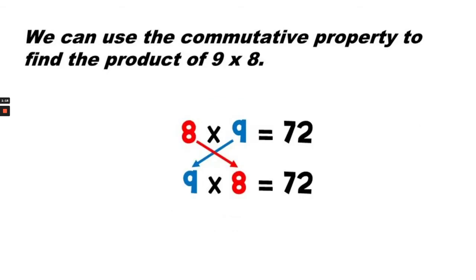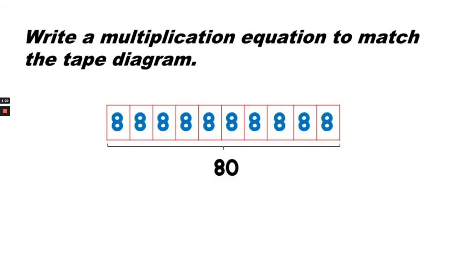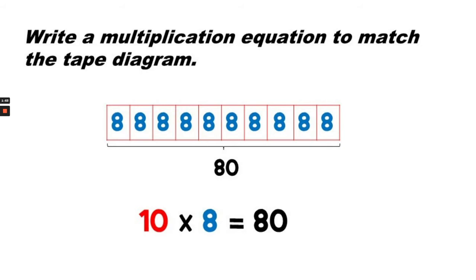Using the commutative property, we can say that 8 times 9 is the same as 9 times 8 — both have a product of 72. Now write a multiplication equation to match this tape diagram. Notice that there are 1, 2, 3, 4, 5, 6, 7, 8, 9, 10 boxes, or 10 groups, and there are 8 in each box. There are 80 in all, so we can say that 10 times 8 equals 80.